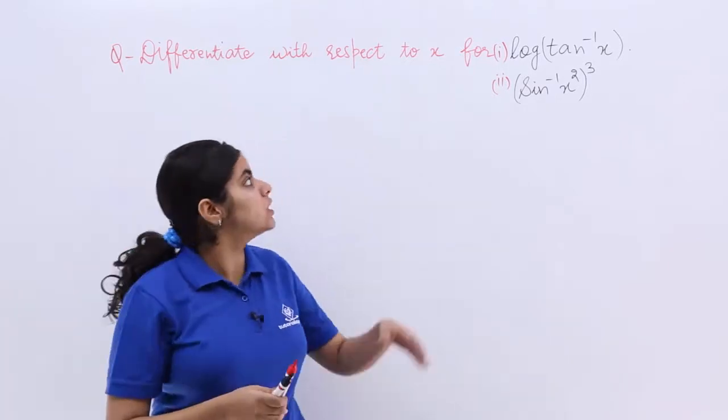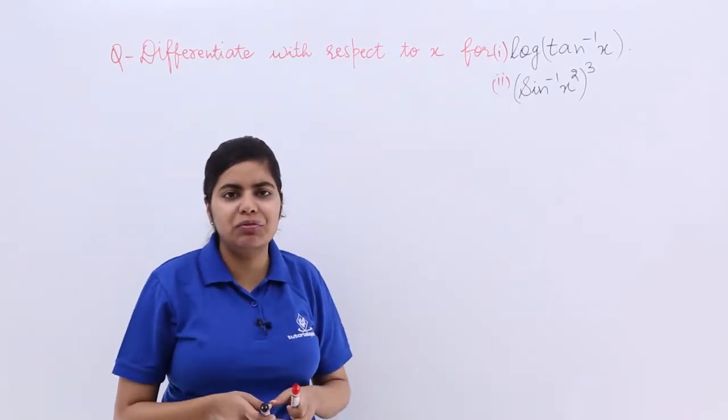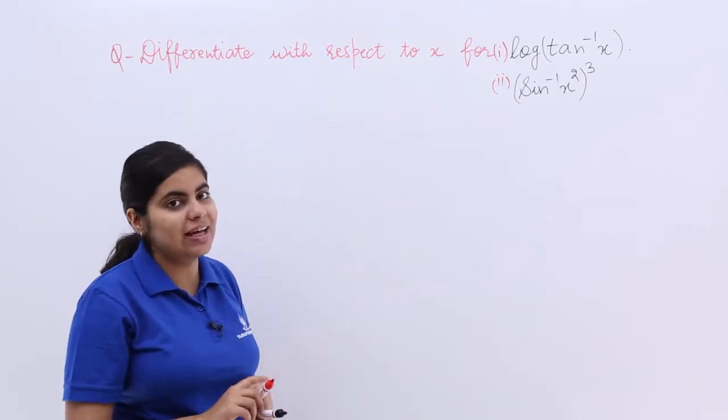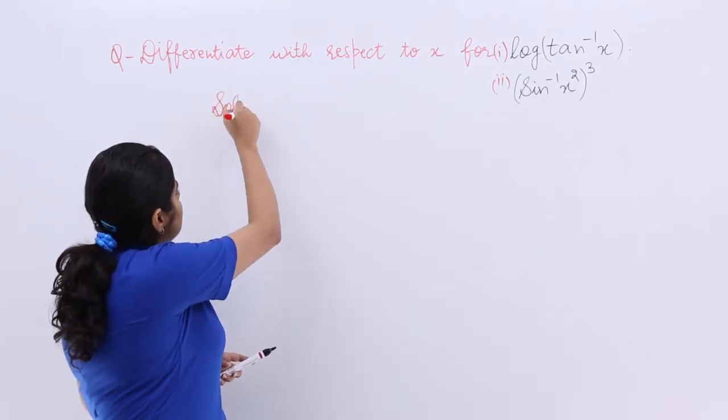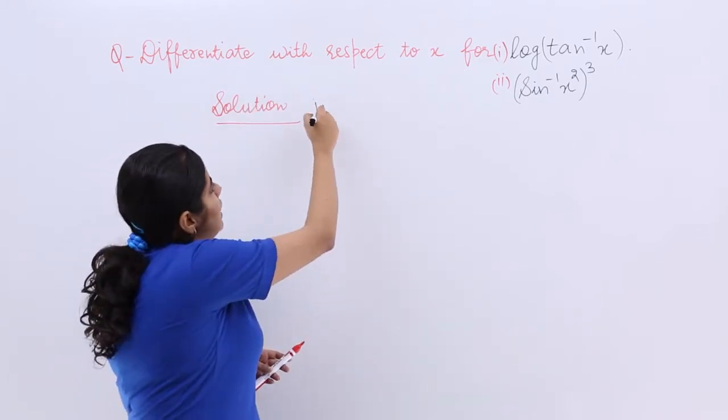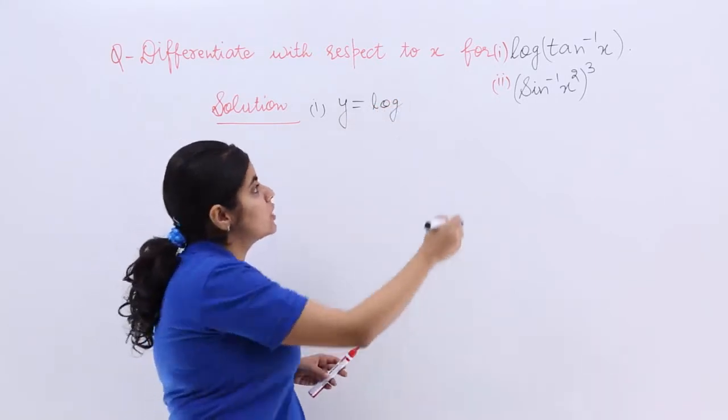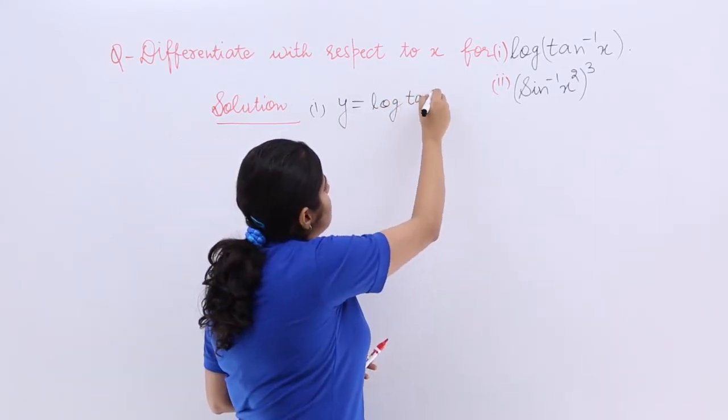We have to differentiate with respect to x for two parts. Let's start with the first part and let's write the heading as solution. Start with the first part. First part is, let's say y is equal to the given function and the given function is log tan inverse x.